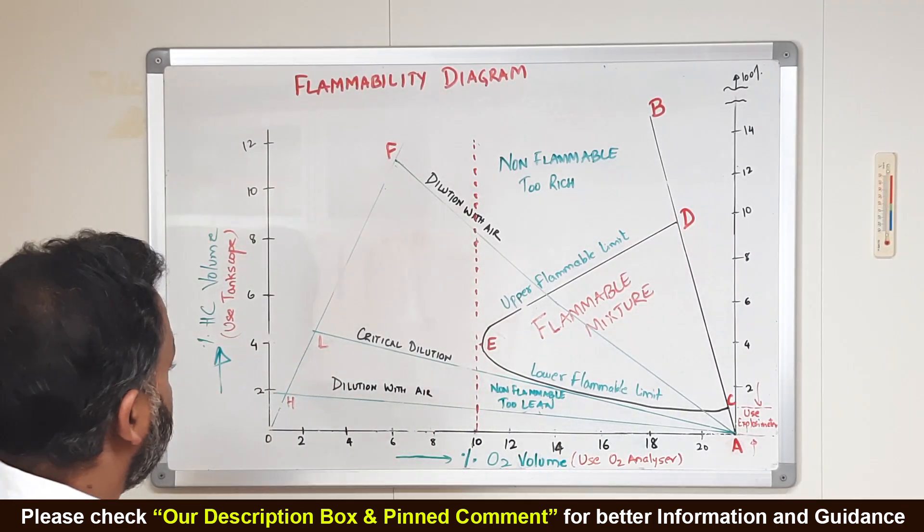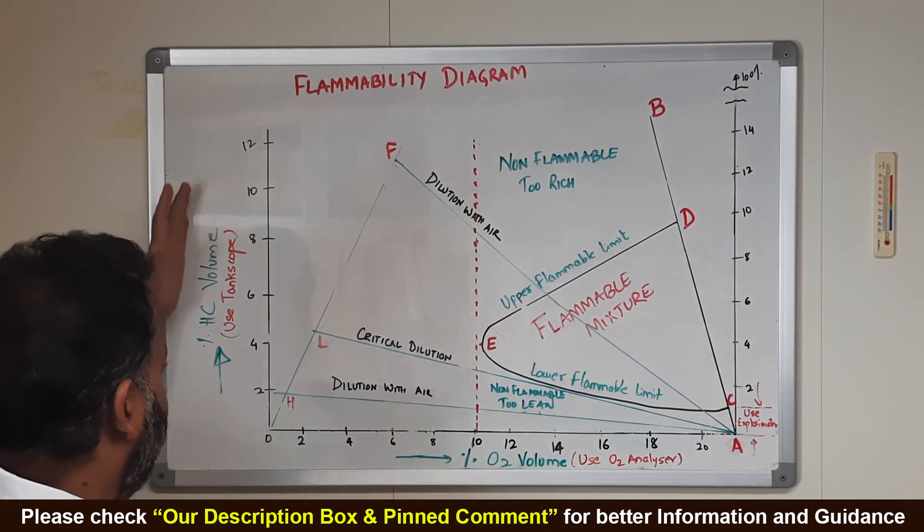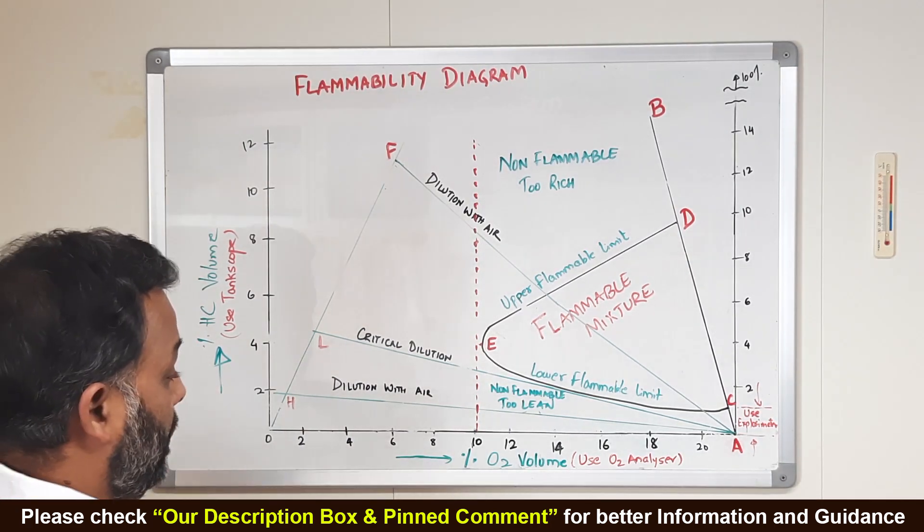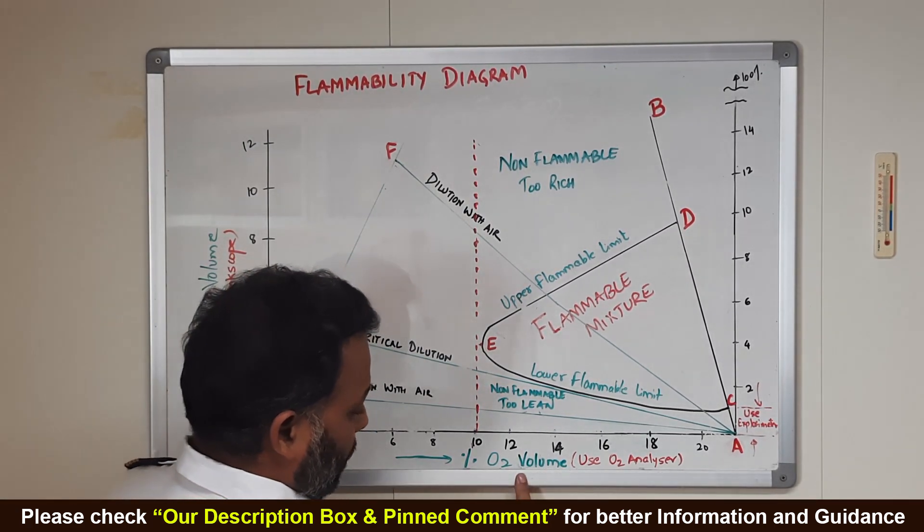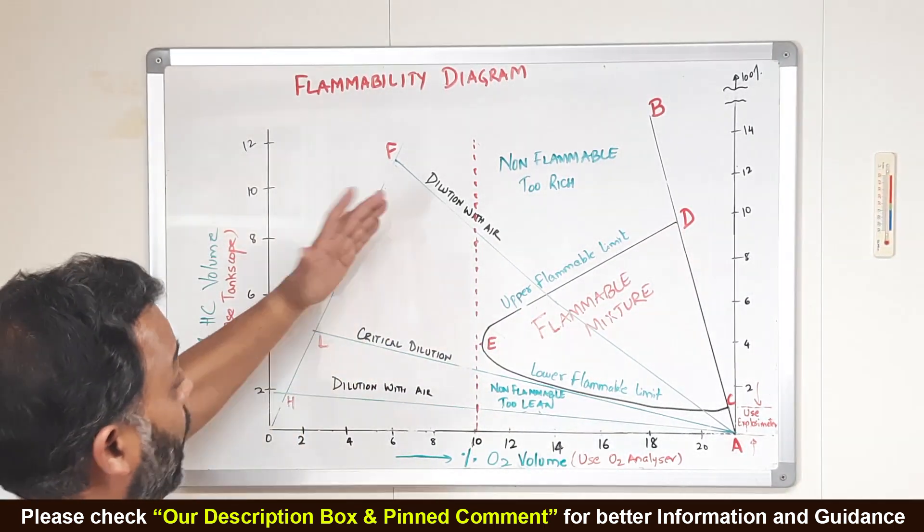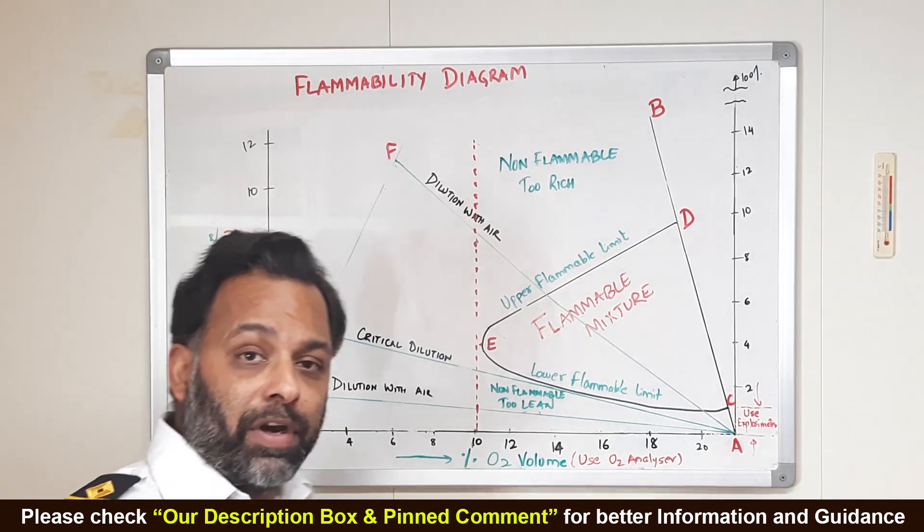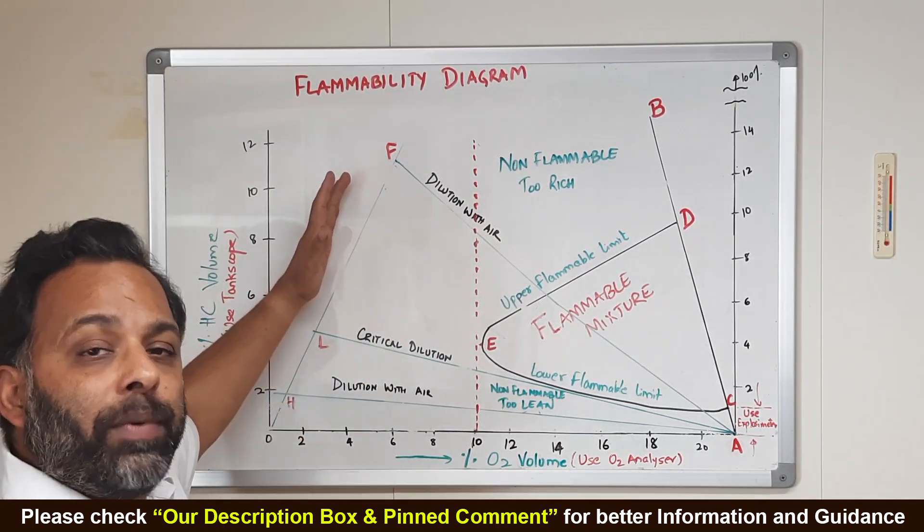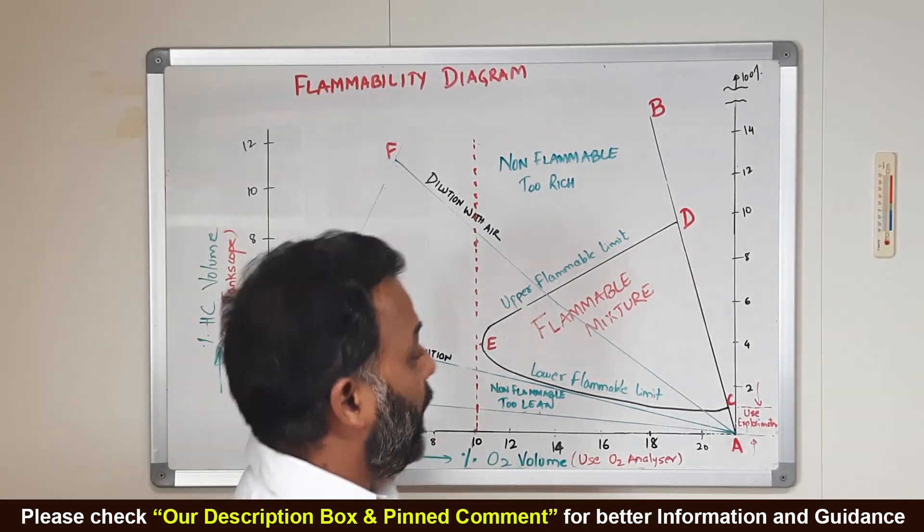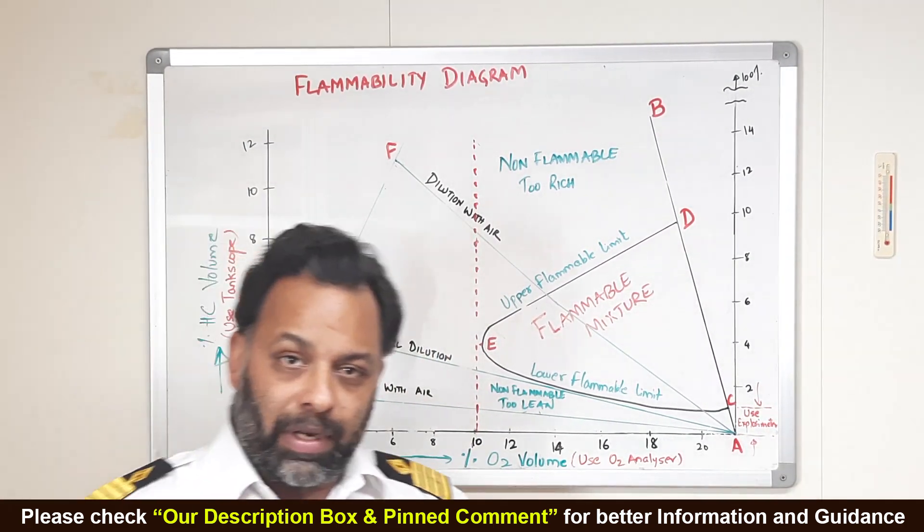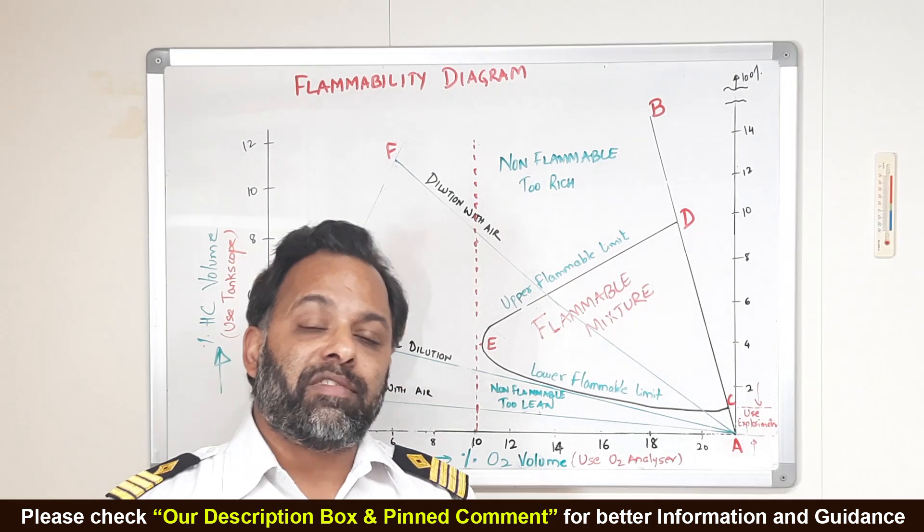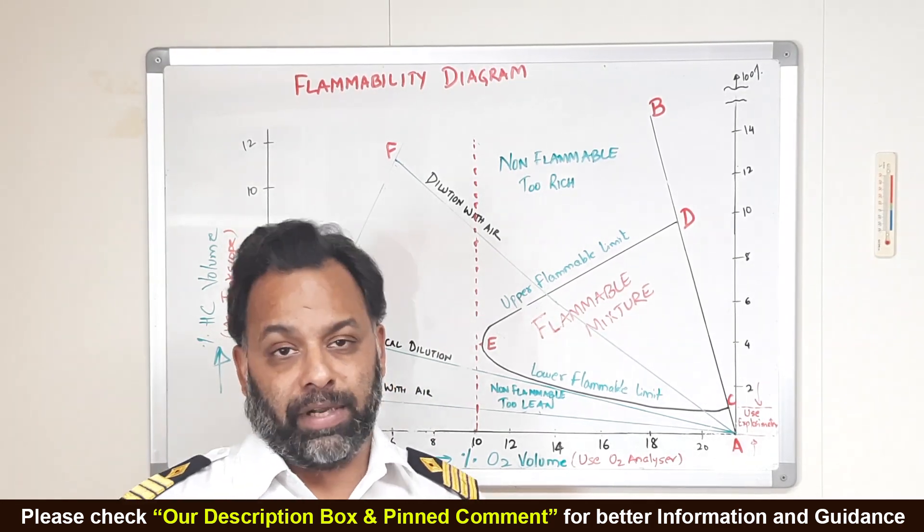Let's consider this diagram. On this y-axis, we have percentage hydrocarbon in volume. On the x-axis, we have percentage oxygen in volume. Now, this flammability diagram is different for different cargoes. So, we are just assuming the flammability diagram for crude oil.